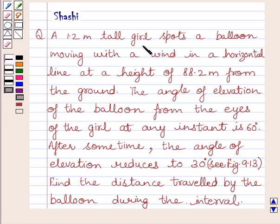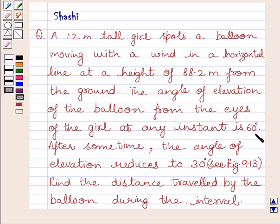A 1.2 meter tall girl spots a balloon moving with the wind in a horizontal line at a height of 88.2 meters from the ground. The angle of elevation of the balloon from the eyes of the girl at any instant is 60 degrees. After some time, the angle of elevation reduces to 30 degrees. Find the distance travelled by the balloon during the interval.